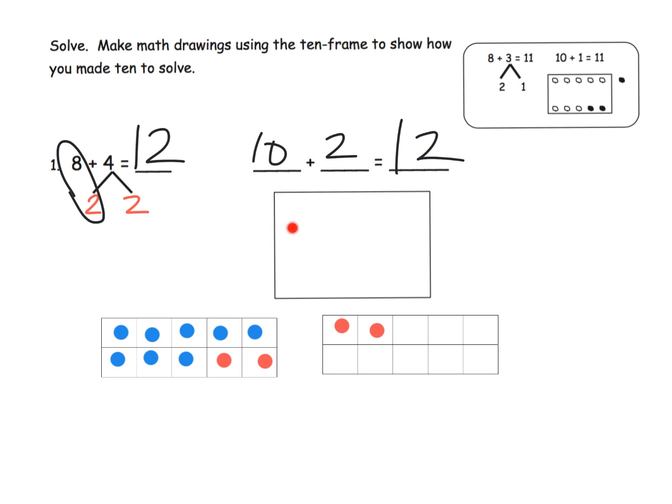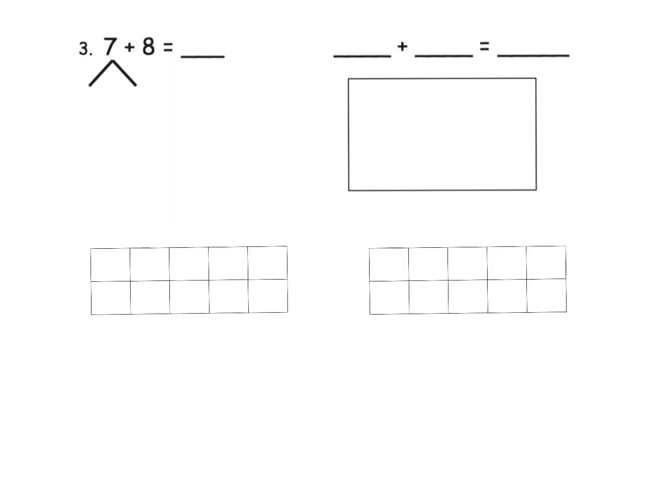Considering what Eureka Math gives you, they're saying they want you to model it like this. I'm going to get my blue: 1, 2, 3, 4, 5, 6, 7, 8. You've just modeled the 8. Now in order to model the 4, you're going to fill in the 10 frame and then you have 2 left over. This is how they want you to model it their way. I'm slightly changing it down here with the actual explicit 10 frames.